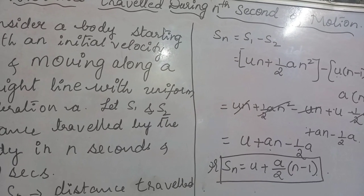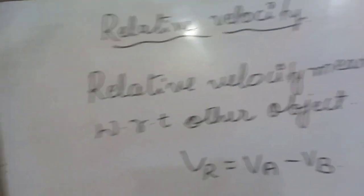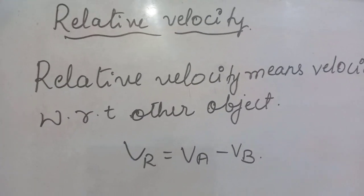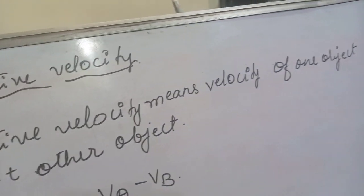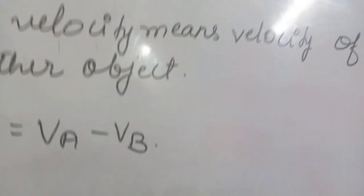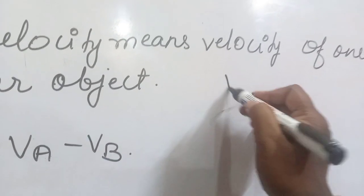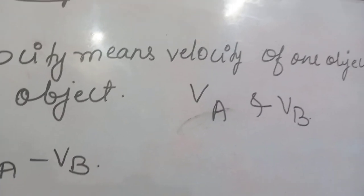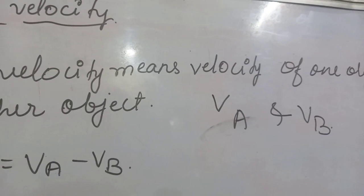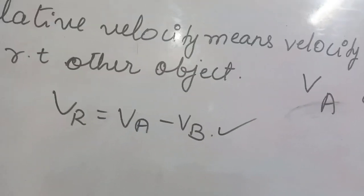Let us move on to relative velocity, the last topic of this chapter. Relative velocity means the velocity of an object with respect to another body. Suppose body A has a velocity VA and body B has a velocity VB. Then the relative velocity is given by the equation VR equal to VA minus VB.